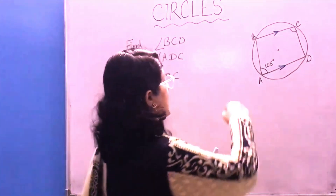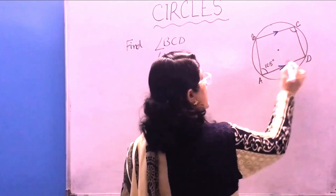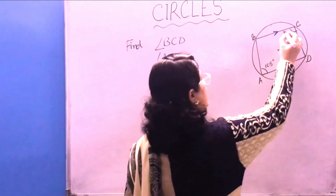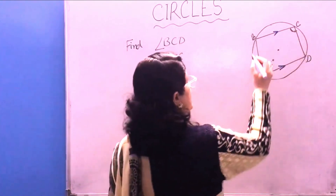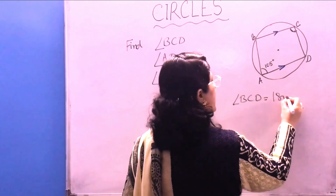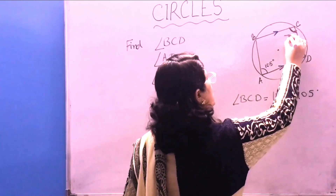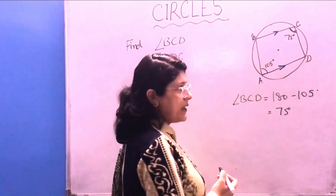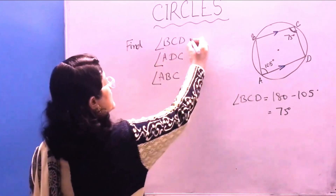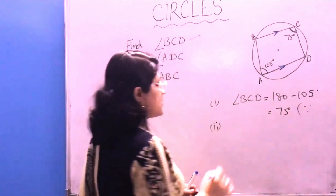The next question involves a cyclic quadrilateral ABCD where angle BAD is given as 105 degrees and side BC is parallel to side AD. Using the theorem that opposite angles of a cyclic quadrilateral are supplementary, angle BCD equals 180 minus 105, which is 75 degrees. So angle BCD is 75 degrees.